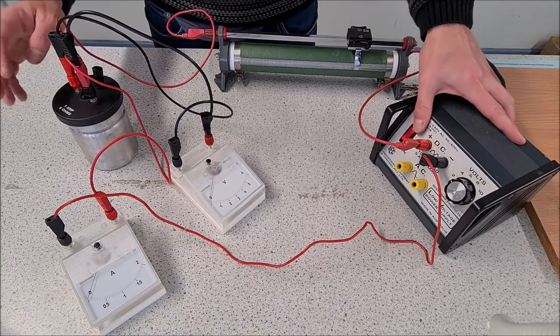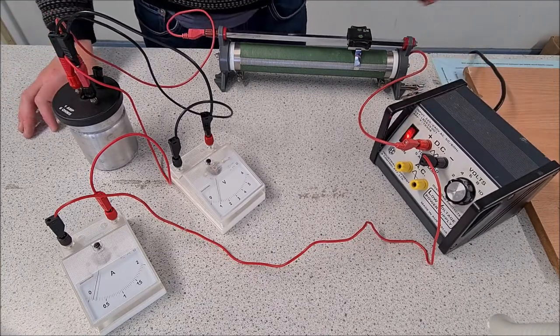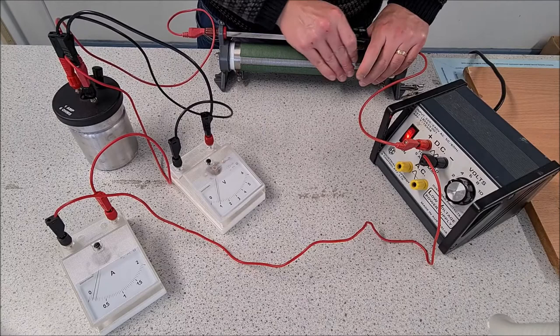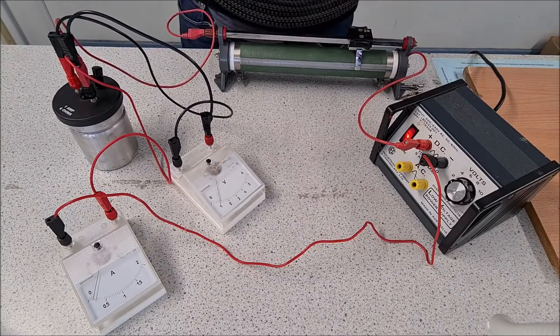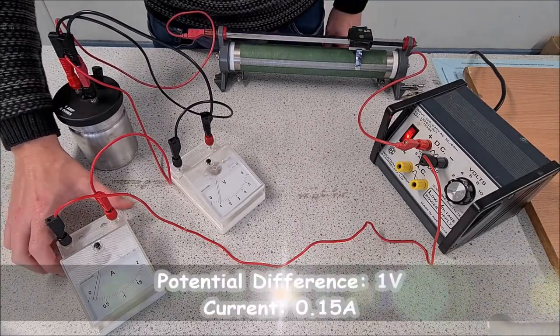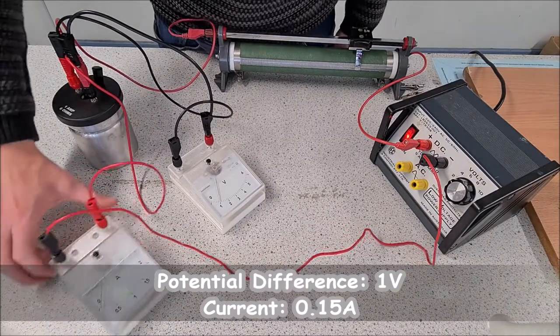So we'll start off with our metallic conductor, we're going to turn it on and adjust the rheostat until we have a voltage or potential difference of 1, and we're going to read off the current, the current here is 0.15.